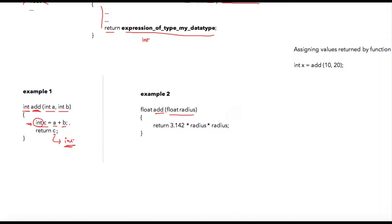In example two, I am defining one more function to which I am passing a single variable as float and it will return a float type of variable. Notice that I am not declaring any additional variable in this function, but we are returning the calculated value inline in the return statement. The 'return' keyword tells the compiler that this value will be returned by the function. Here, 3.142 is a float, radius is a float, so multiplying these will give a float which will be returned.